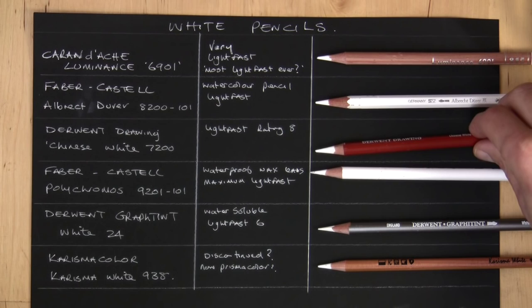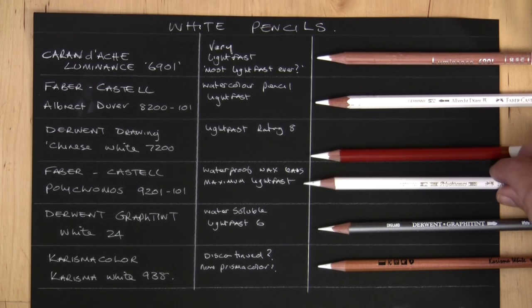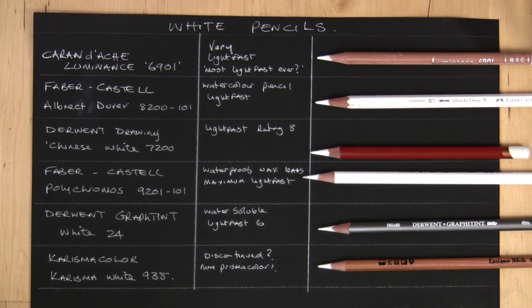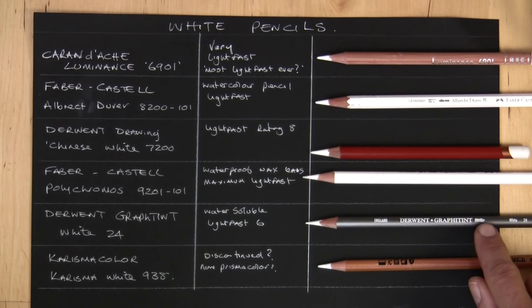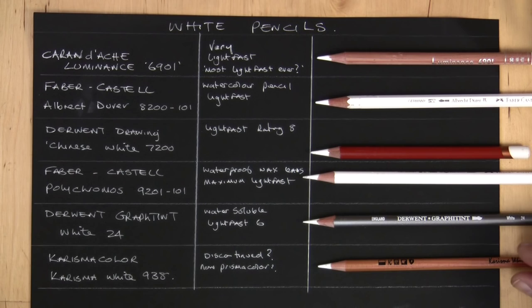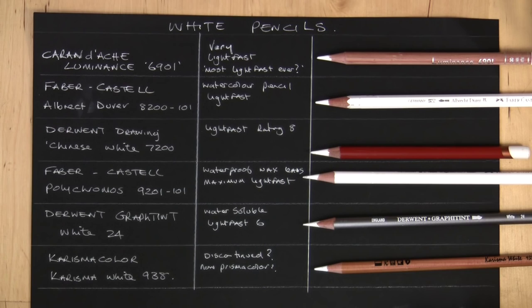Then we've got the Derwent Drawing White, so that's Chinese White 7200. Another Faber-Castell Polychromos, so that's quite a popular one, also classed as maximum light fastness. Derwent Graphitint, so it's a new pencil I've just received so I thought I'd pop that in there as well. Light fast rating of six, that's water soluble which you can usually tell by the little brush mark. And then the other one I had in my collection, Prismacolor, and that's white 938.